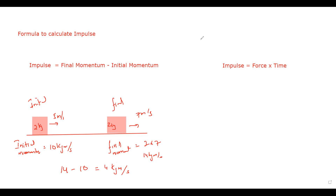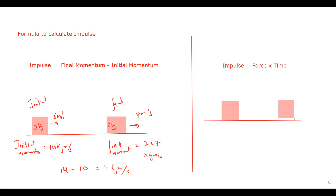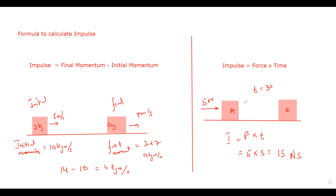For the second formula: if the object changes speed but no speed values are given — instead, a resultant force of 5 Newtons is applied to move the object from position A to position B in 3 seconds — then use impulse equals force multiplied by time. So 5 multiplied by 3 equals 15 Newton seconds.